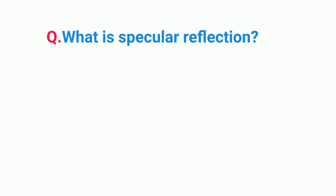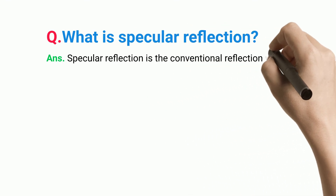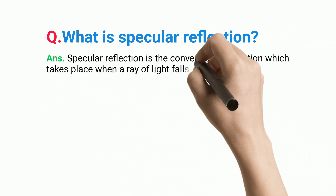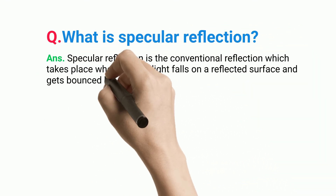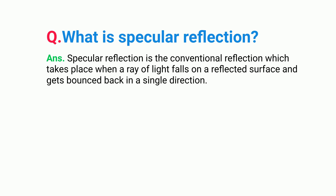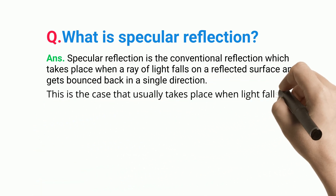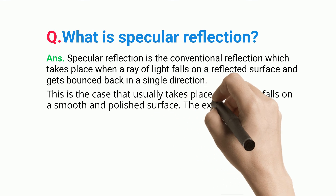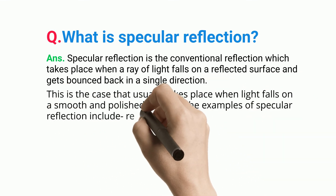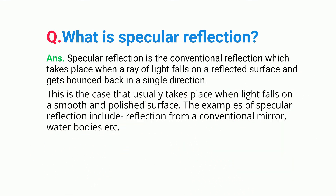What is specular reflection? Specular reflection is the conventional reflection which takes place when a ray of light falls on a reflective surface and gets bounced back in a single direction. This is the case that usually takes place when light falls on a smooth and polished surface. Examples of specular reflection include reflection from a conventional mirror, water bodies, etc.